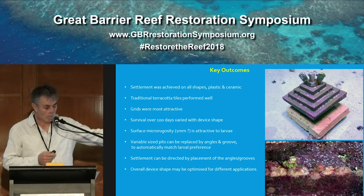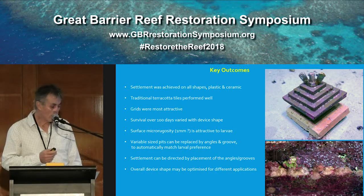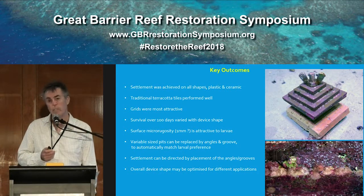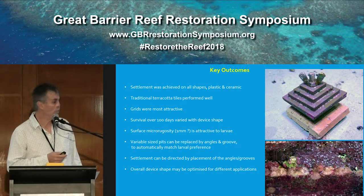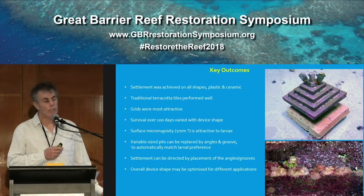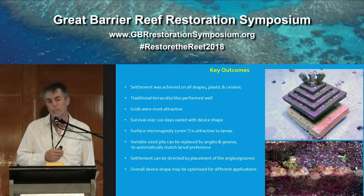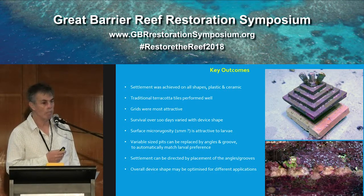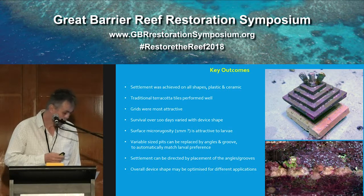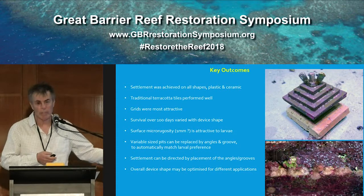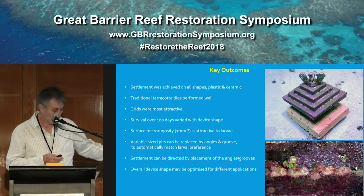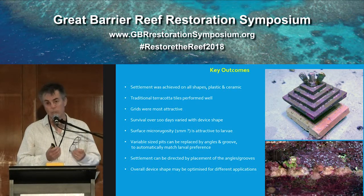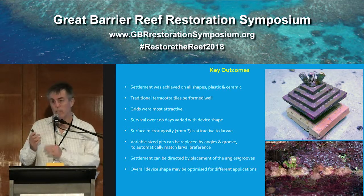The two photos to the right show one of the shapes — a three-dimensional stepped pyramid with steps five millimetres high. The pale white lines on the grooves are lines of recruits. There was the odd recruit out on the flat, but they were very strongly associated — almost 99% — with the grooves. The bottom photo is magnification under the microscope showing all recruits packed into those grooves. This means we can direct where larvae settle on these devices by where we put the micro-refuges, potentially engineering shapes for particular outcomes.